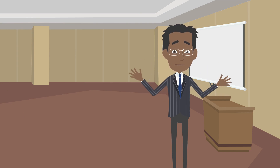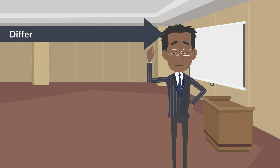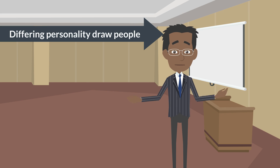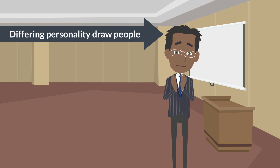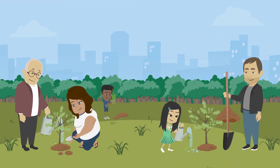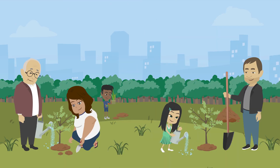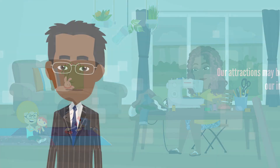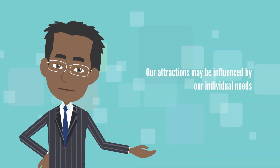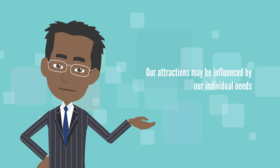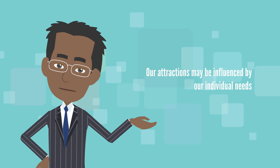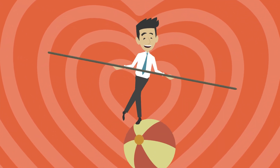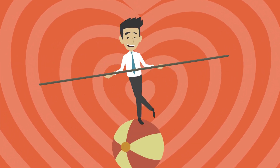Need complementarity theory provides a perspective on how differing personality dispositions can draw people together, contributing to the diversity and richness of human relationships. It suggests that our attractions may be influenced by our individual needs, potentially leading us towards partners who can complement and balance us in meaningful ways.